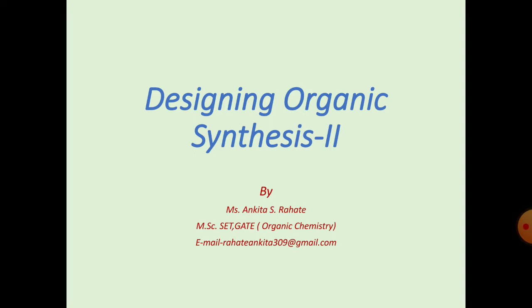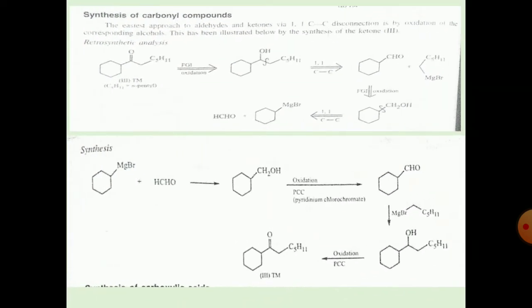MSC Part 2, Semester 4, Paper 2: Synthetic Organic Chemistry. Unit 2: Designing Organic Synthesis. The next point is the synthesis of a carbonyl compound, where any alcohol can be disconnected at the C-C bond next to the oxygen, as in Table 6.2, to give an aldehyde or ketone and the Grignard reagent as starting material.